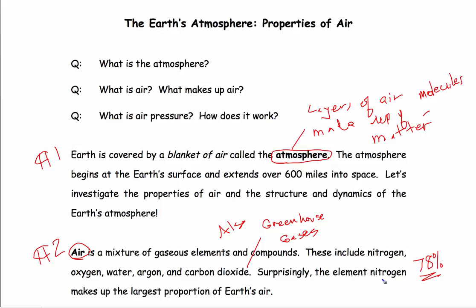About 78% is made up by nitrogen, and oxygen makes up about 21% of the air. If you look at that, that's about 99% of all of the atmosphere. So what makes up that other 1%? Well, the argon, carbon dioxide, greenhouse gases, and gases such as that.